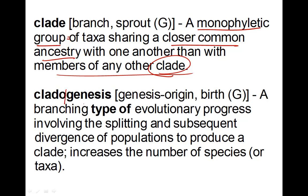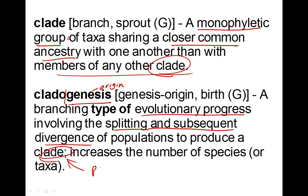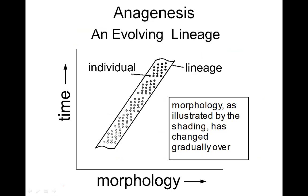Cladogenesis — genesis means origin — so cladogenesis is the origin of clades. This is a branching type of evolutionary process that gives rise, through a process of splitting and divergence, to new clades, or new monophyletic groups. To understand clades and cladogenesis, we're going to return and look at these evolving lineages that we've talked about before.